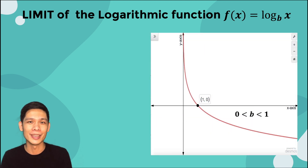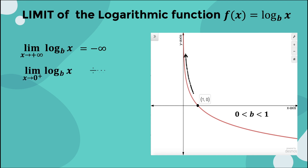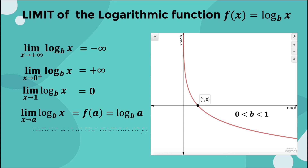If b is between 0 and 1, then the limits of the logarithmic function f(x) = log base b of x are the following. The limit as x approaches positive infinity is equal to negative infinity. The limit as x approaches 0 from the right is equal to positive infinity. The limit as x approaches 1 is equal to 0. And the limit as x approaches a is equal to f(a), which is equal to log base b of a, where a is in the domain of f.